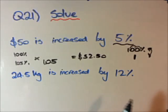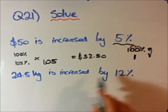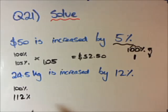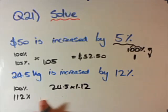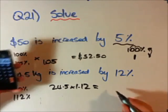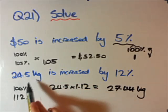So I bought my hat for $50 and sold it to my brother for $52.50 — a $2.50 profit. For the second question: 24.5 kilograms increased by 12%. The initial value is 100%, and we increase by 12%, so it becomes 112%, which as a decimal is 1.12. So we go 24.5 multiplied by 1.12, which equals 27.44 kilograms — our new value.